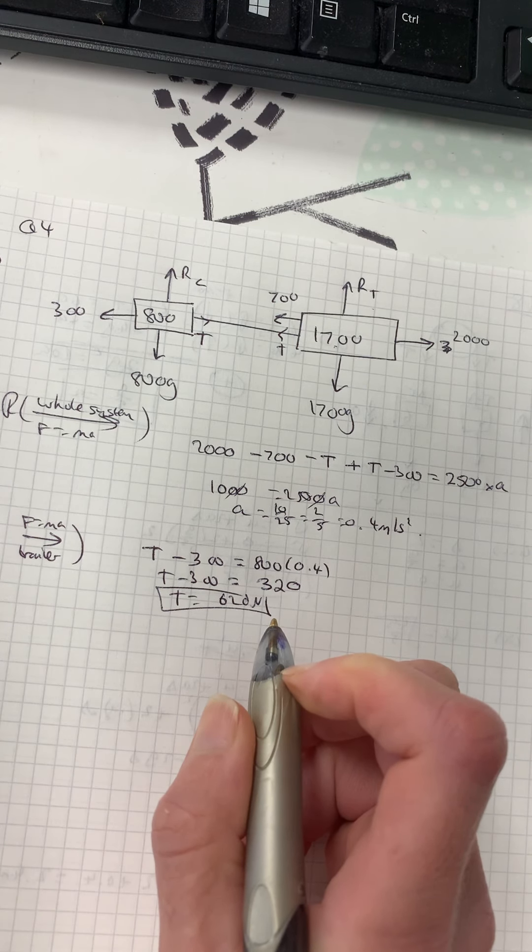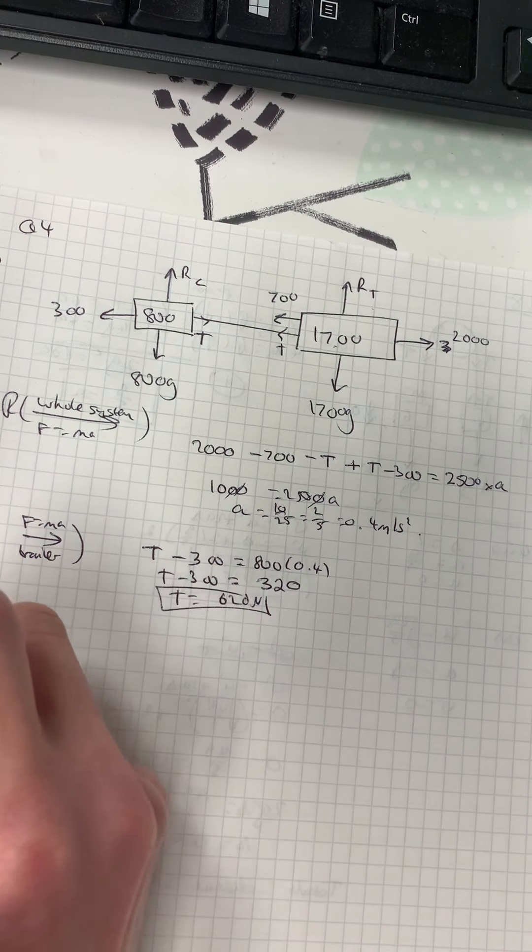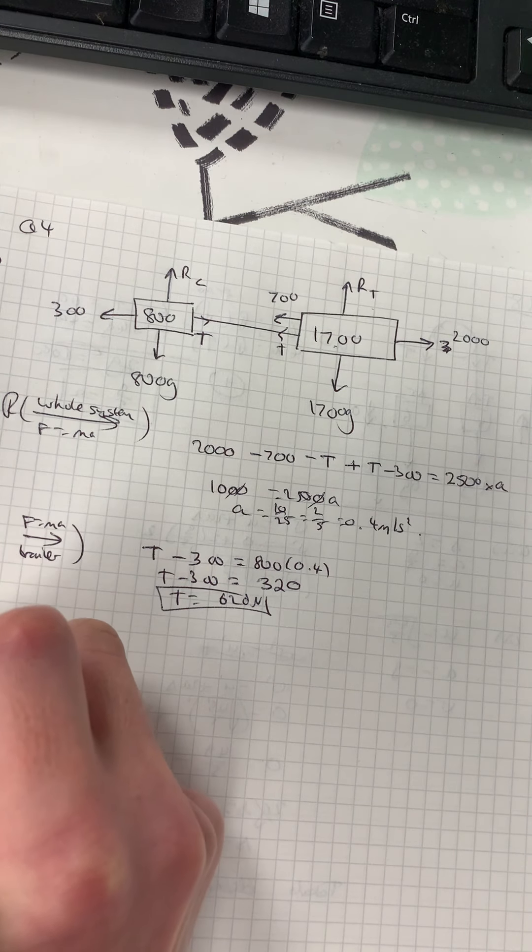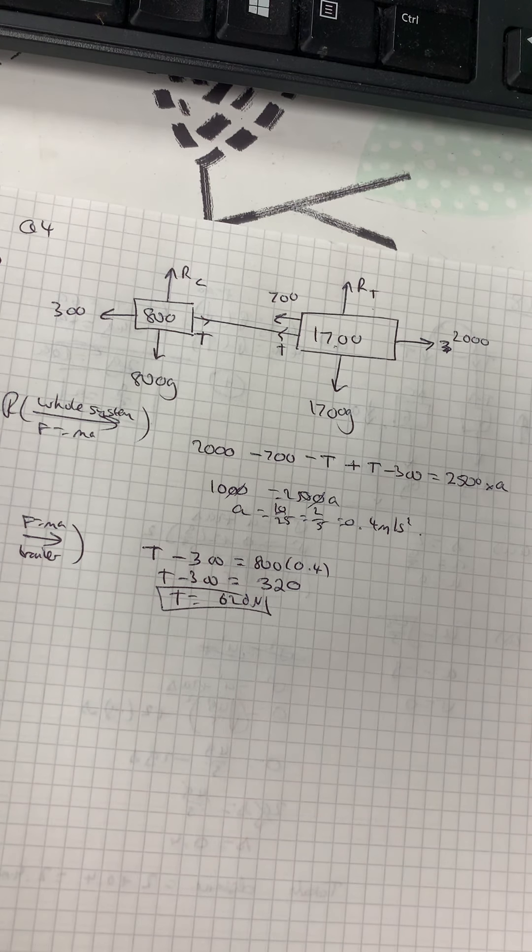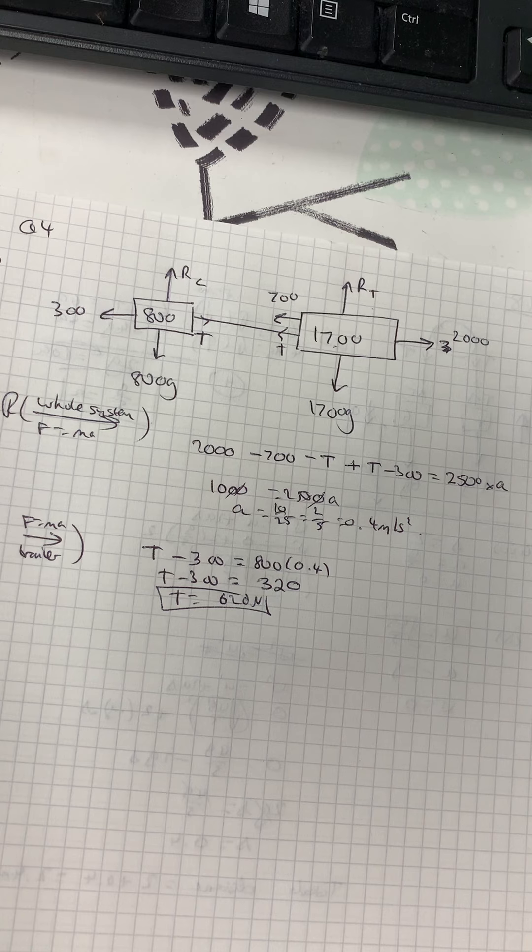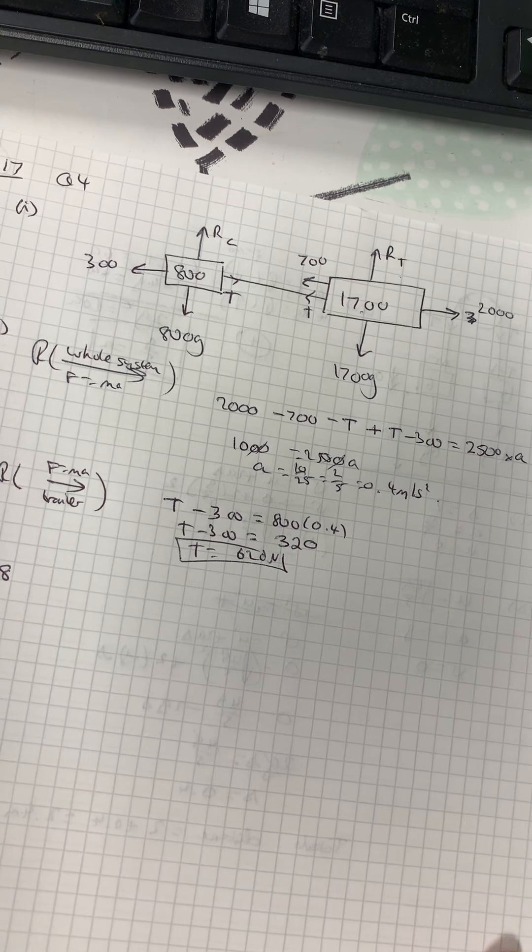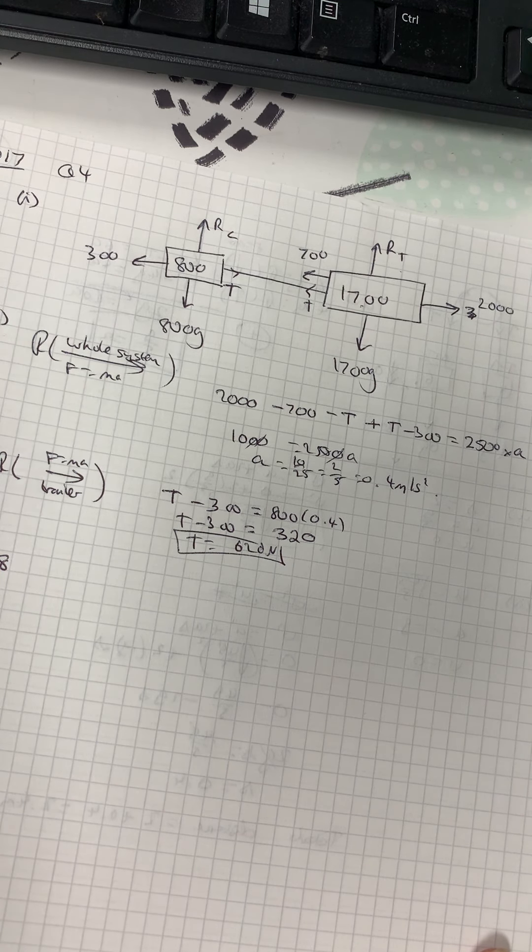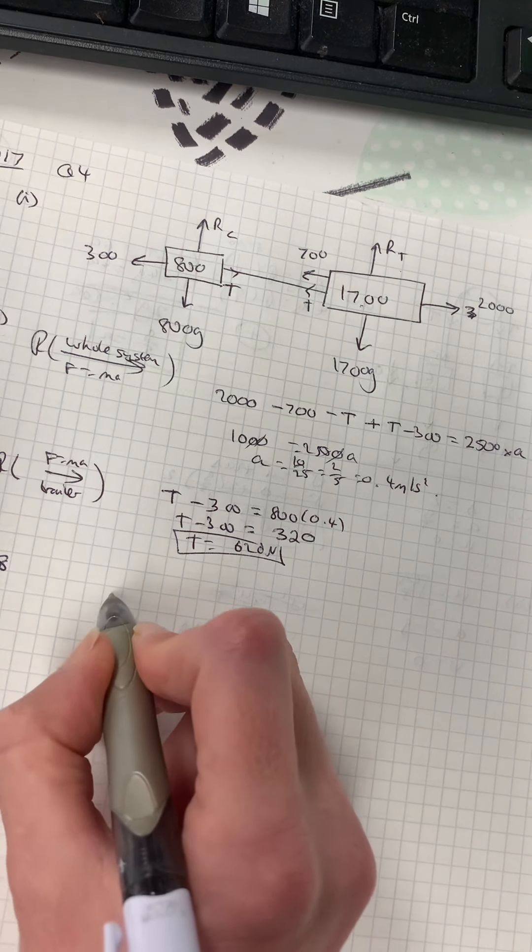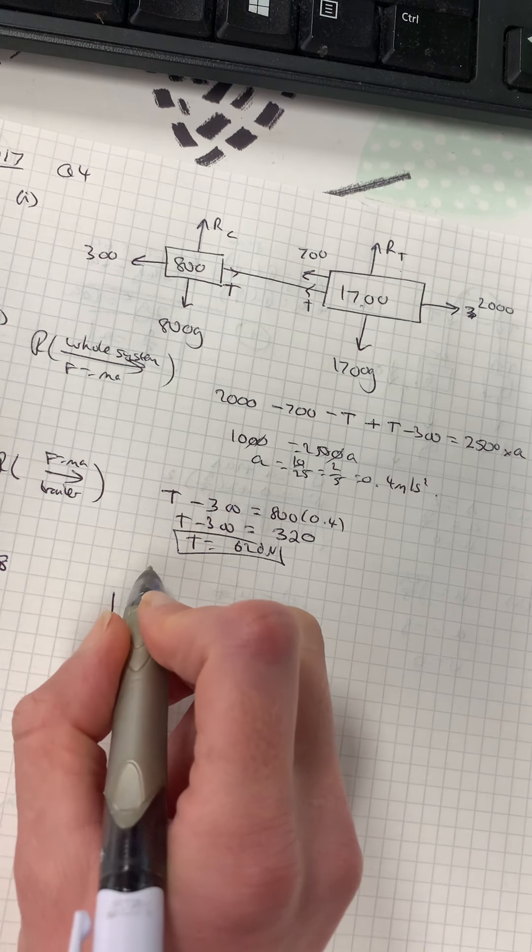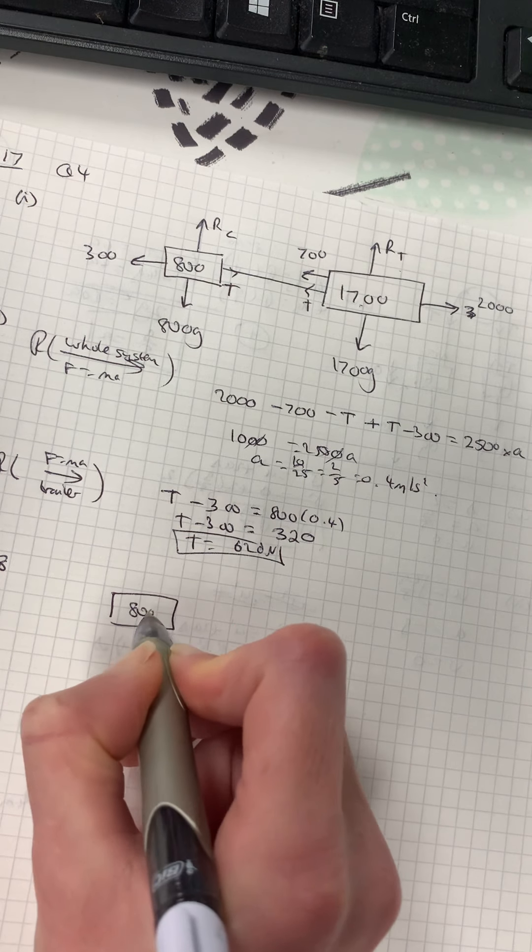Okay, so the next pilot question. When the speed is 8, so when U is 8, the tow bar breaks. Assuming that the resistance to the motion of the car remains the same, find the distance moved by the car from the moment the tow bar breaks until it comes to rest. So for that we've got different systems completely going on here. Let's draw out the distance moved by the car.